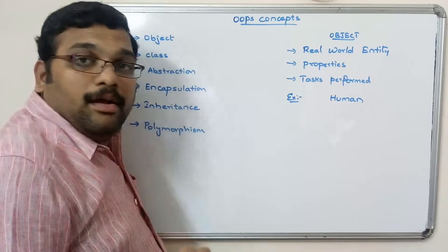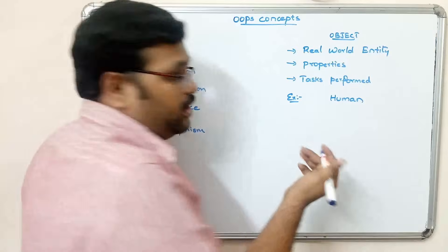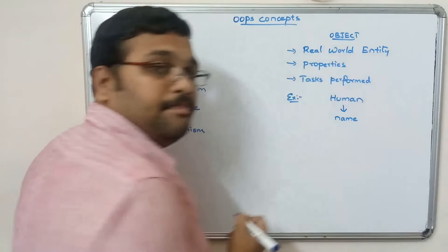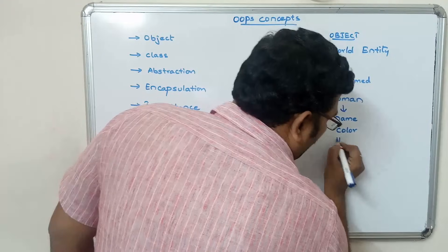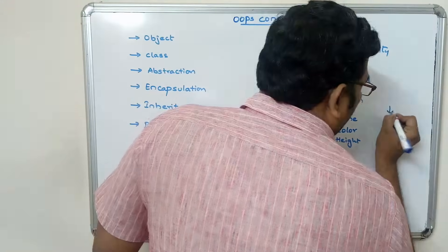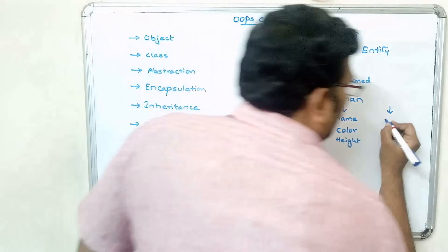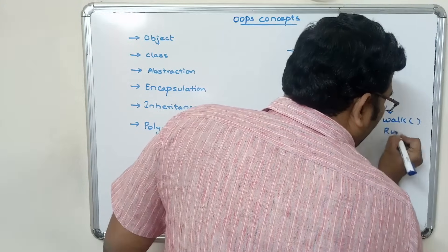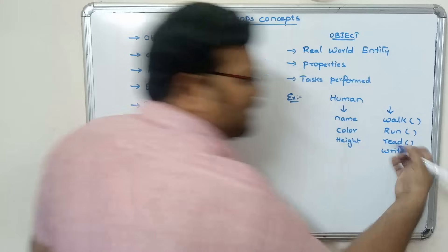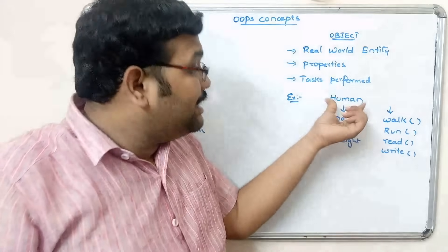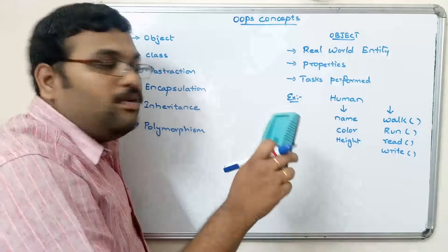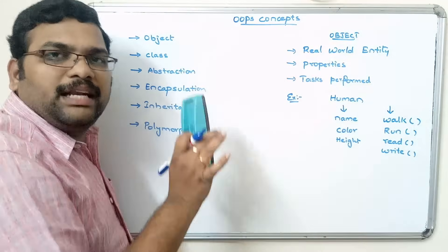Let us take an example. A human being is also an entity — it is also an object. A human consists of properties like name, color, height, and so on. What tasks can be done by this human? Work, run, write, etc. These are the tasks that can be performed by this human. So we can consider the human as an object — a real world entity which has properties and tasks it can perform.